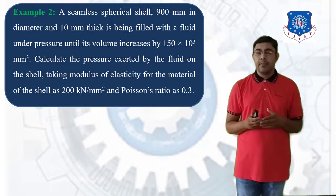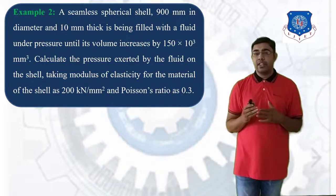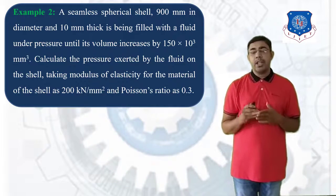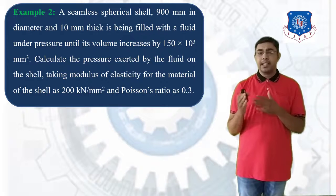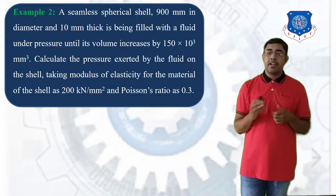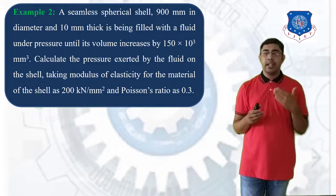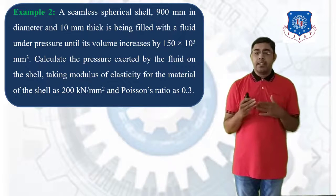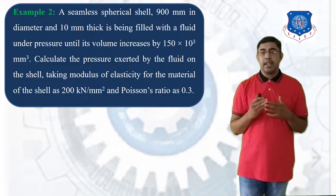A seamless spherical cell 900 mm in diameter and 10 mm thick is being filled with fluid under pressure until its volume increased by 150 × 10³ mm³. Calculate the pressure exerted by the fluid in this cell.